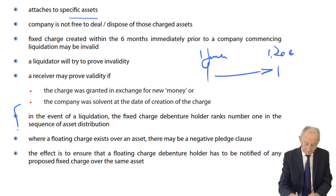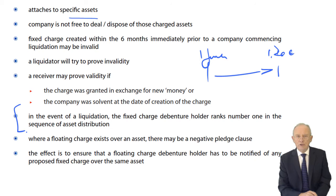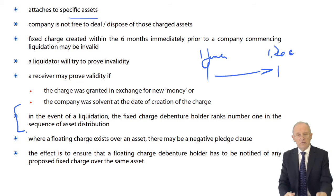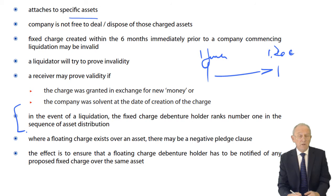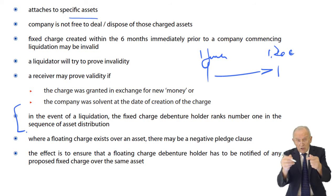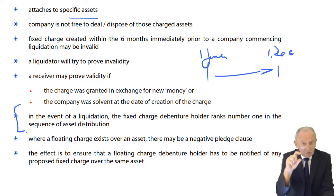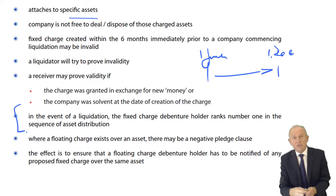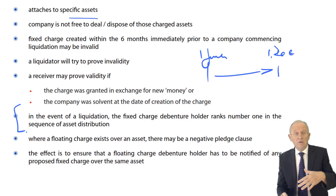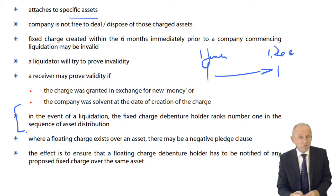In a liquidation, the fixed charge holder ranks number one. They take the title deeds, sell the building, repay their outstanding capital and interest, and cover the costs of realisation. Any surplus goes back to the liquidator. If there's a shortfall — the building sells for less than the outstanding capital, interest, and expenses — then the fixed charge debenture holder for that shortfall falls down to layer number six, ranking amongst the unsecured creditors, ahead of the best-prioritised shareholders but at the bottom of the creditors before anything is paid to shareholders.